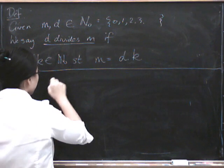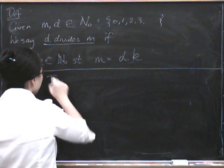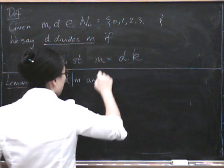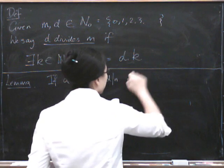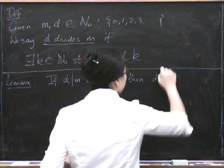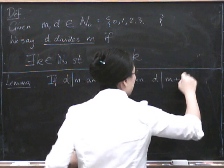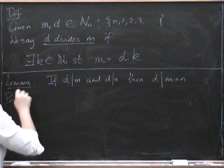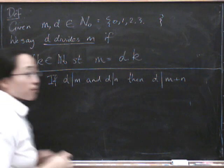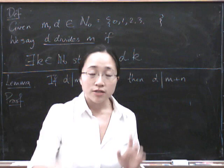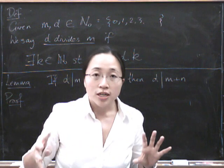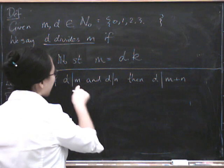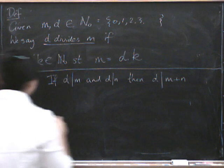We're going to prove that if D divides M and D divides N, then D divides M plus N. So let's prove this. Remember, for a proof, we have to write down a series of statements, each of which follows from the one before, or is one of the things we've been allowed to assume in this proof. So here we're allowed to assume that D divides M and D divides N.